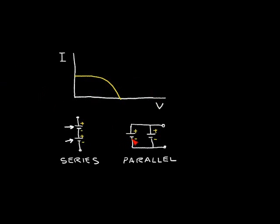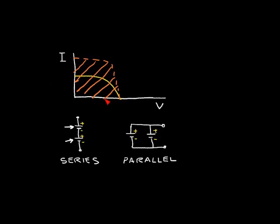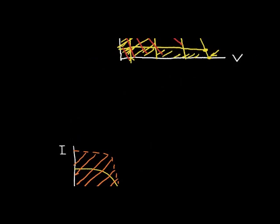Now let's connect two identical solar cells in parallel. In this case we maintain the same voltage but double the current capability of the solar cell. The new I-V curve has a higher current but the same voltage, and the area under the curve is approximately doubled. So connecting cells in parallel also doubles the extractable power, just as series connection does.